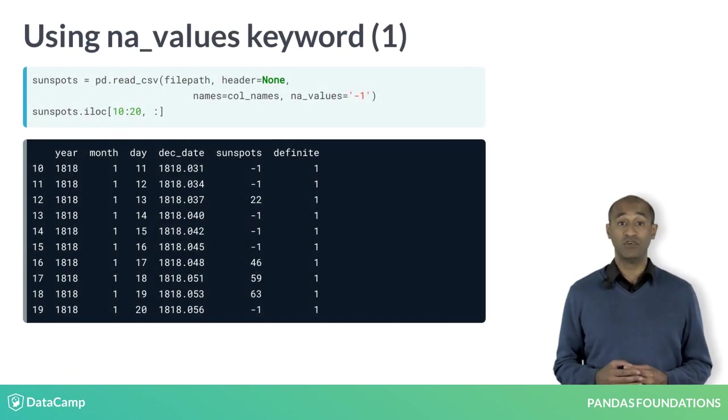We can also read the negative 1 entries in the sunspots column as NAN or not a number, sometimes called a null value. We do this with the NA values keyword. We try NA values equals quote minus 1 quote, but the sunspot column still has entries of negative 1.